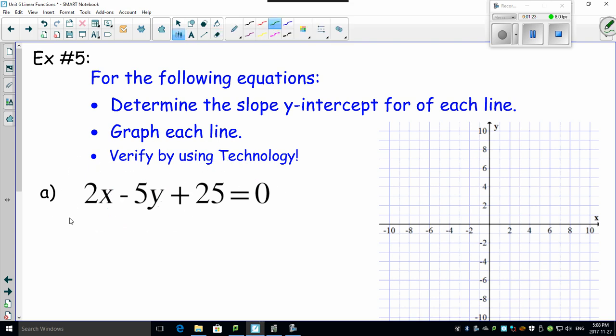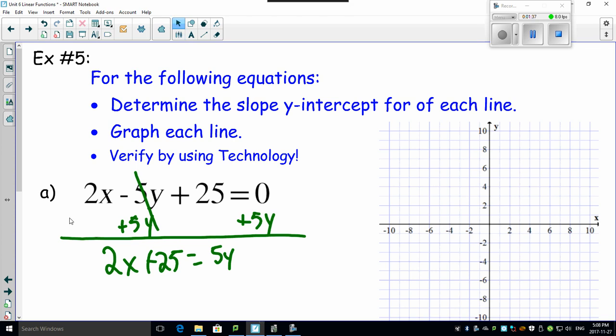I'm going to bring this guy over because it's negative. So just add 5y to both sides. That cancels this out, giving me 2x plus 25 equals 5y. And check this out. Now, all I've got to do is divide by 5 both sides, cancelling this out, leaving me with y equals 2 divided by 5 is 2/5x, 25 divided by 5 is 5.